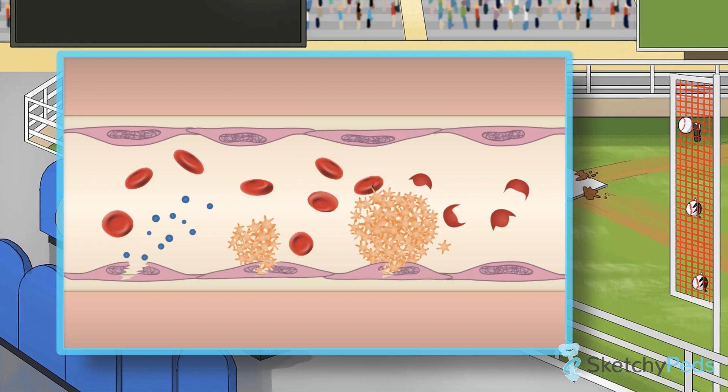Finally, the kidneys take this pretty hard. Glomeruli and renal vessels are affected by this microangiopathy, leading to the decreased renal function.